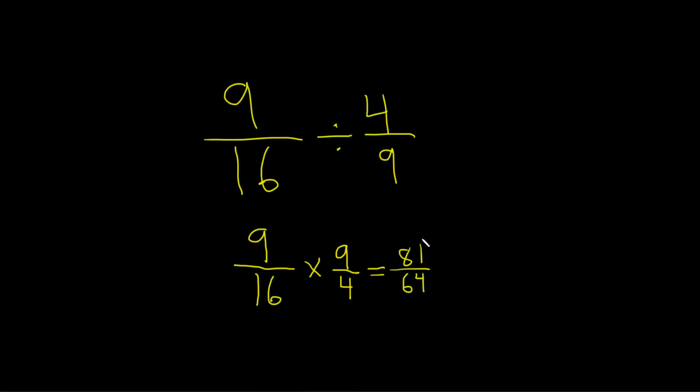Wow, a much harder problem. So we have 81 over 64. And that really can't be reduced. Now, this is an improper fraction. So what you can do is write it as a mixed number.